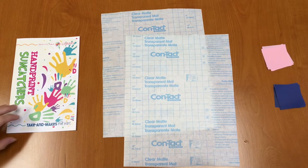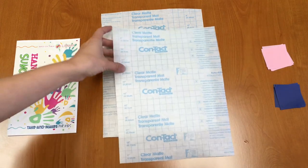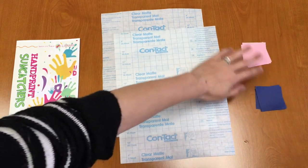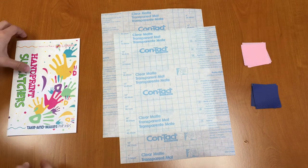In your Take and Make kit you should have an instruction booklet, two pieces of contact paper, and two different colors of tissue paper squares as well. Let's get started.